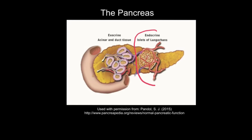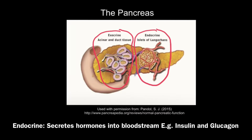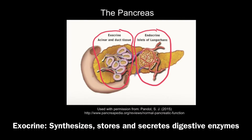The pancreas is an organ made up of two portions: an endocrine portion and an exocrine portion. The endocrine portion secretes hormones such as insulin and glucagon directly into the bloodstream. The exocrine portion synthesizes, stores, and secretes digestive enzymes such as pancreatic amylase, making up about 85% of the pancreas.